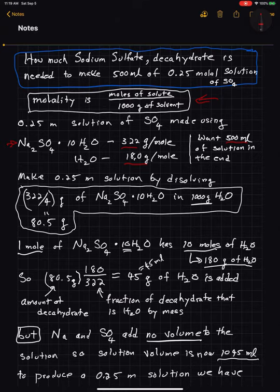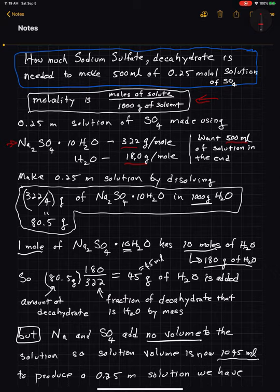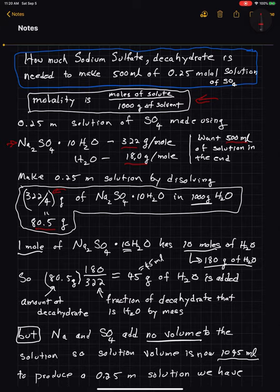So how would I make a 0.25 molal solution of decahydrate? I look at the definition: I need moles of solute over 1000 grams of solvent — that's 1000 grams of water, a kilogram. So I'm going to need one quarter, which is 0.25, one quarter mole of decahydrate. One quarter mole of decahydrate is one mole divided by four. Since 322 grams is one mole, I need that divided by four, which turns out to be 80.5 grams. So I take 80.5 grams of decahydrate, put it in 1000 grams of water, and that gives me a 0.25 molal solution.